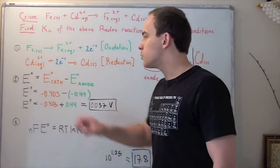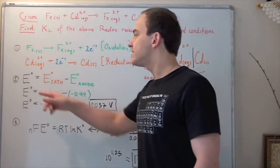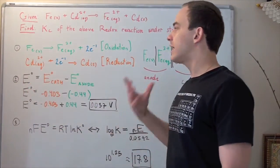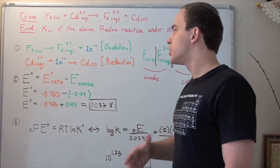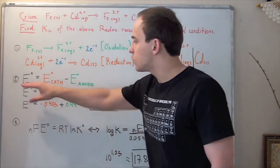Let's go to step two. In steps two and three, we want to find the cell voltage of our electrochemical cell and then use the cell voltage to find our equilibrium constant K.